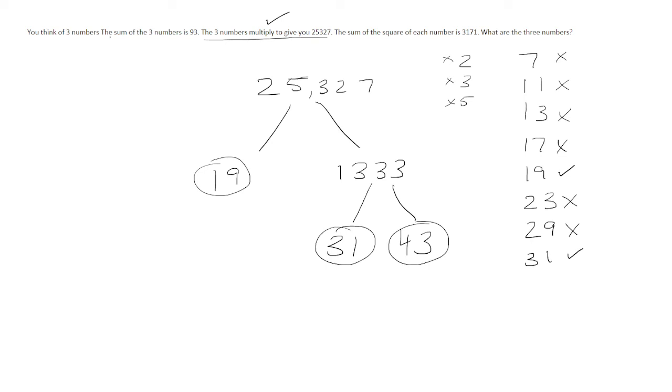Now, let's check. The sum of three numbers is 93. Is that true? Well, 19 plus 31, that's going to be 50. Plus 43, that's 93. So yeah, definitely that works.